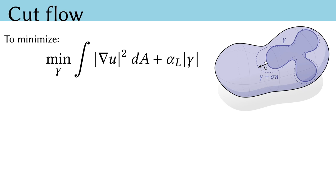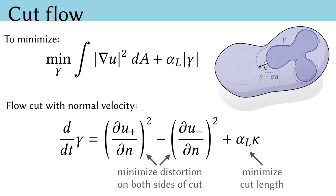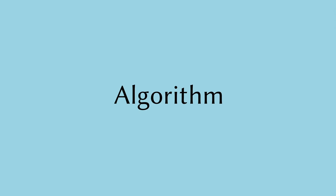Putting this all together, to minimize our cut energy which has a distortion term and a length term, we flow the cut in the normal direction with magnitude given by the distortion shape derivative and the length shape derivative. Notice that the distortion derivative appears twice with the opposite sign because along the cut there is distortion on both sides of the curve.